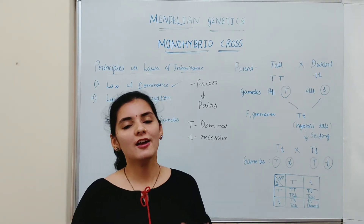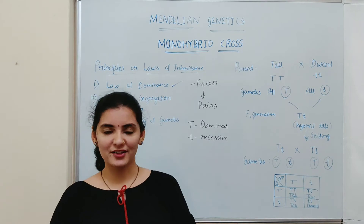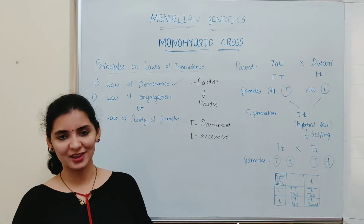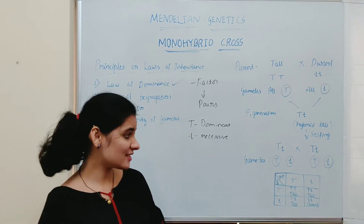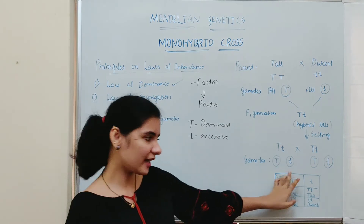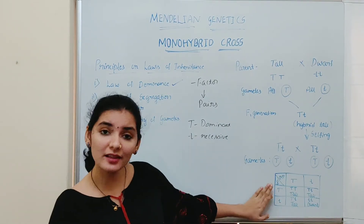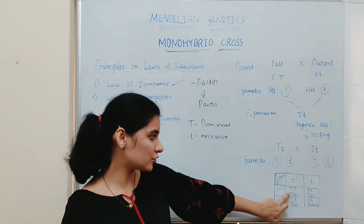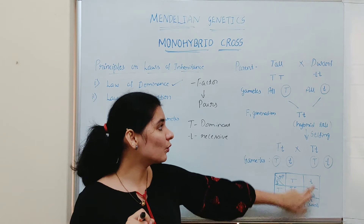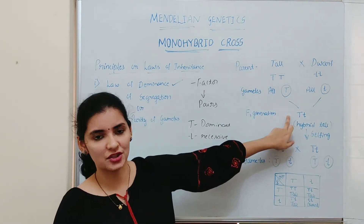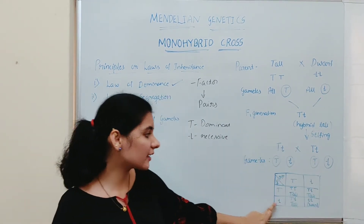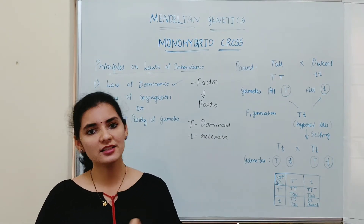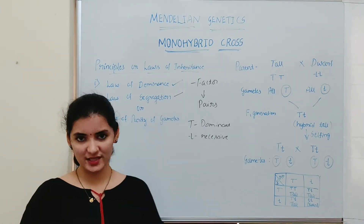According to the law of dominance, when there are two dissimilar factors, one factor will dominate over the other. Mendel had one more question from the monohybrid cross: why and how both characters reappeared in the F2 generation, which were absent in the F1 generation? Here both tall and dwarf characters reappeared, but the dwarf character was absent in the F1 generation. How both characters reappeared in the F2 generation was Mendel's question, and he answered it with the help of the law of segregation.